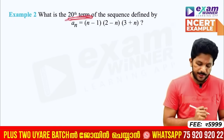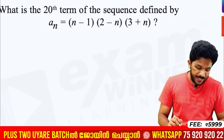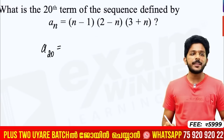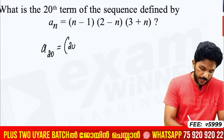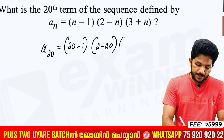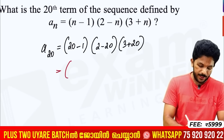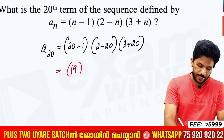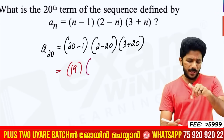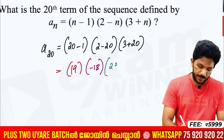What is the 20th term? Here, n is 20. So we find a20. 20 minus 1 is 19. 2 minus n becomes 2 minus 20, which is minus 18. 3 plus n becomes 3 plus 20, which is 23.